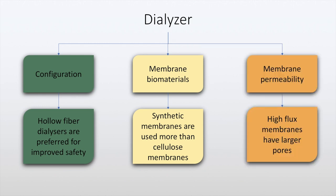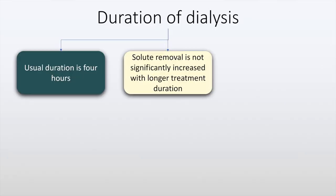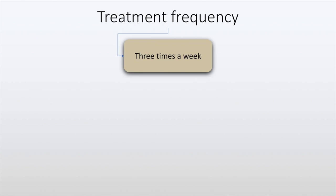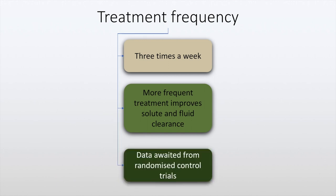When it comes to membrane permeability, high-flux membranes are now preferred. The duration of dialysis is generally four hours and solute removal is not significantly increased with longer duration. However, longer duration of dialysis does increase the incidence of intradialytic hypotension. Dialysis is generally given three times a week and more frequent treatment improves solute and fluid clearance. However, data from large randomized control trials in this regard are awaited.